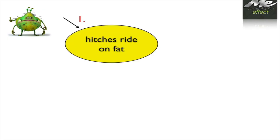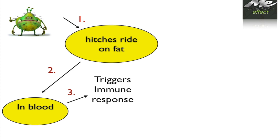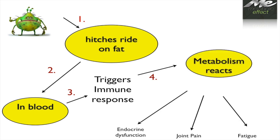Here's how this works. Again, the LPS is taken away from the bacteria typically when it dies and it hitches a ride on the fat cell. Once that fat cell gets into the bloodstream, the immune system picks up that LPS is there and there is an immune response. That immune response causes the metabolism to react and you get endocrine dysfunction, dysfunction in your hormonal system.